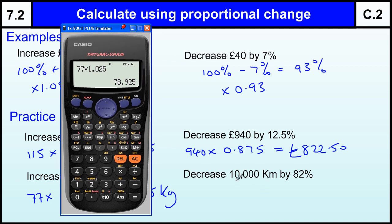And the last one, to decrease by 82% is the same as to find out 100 minus 82 which is 18%, and therefore we need to times by 0.18. So 10,000 times by 0.18 is going to be 1,800 kilometers.